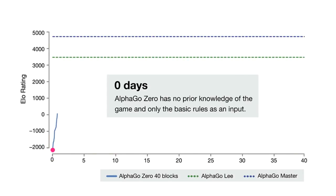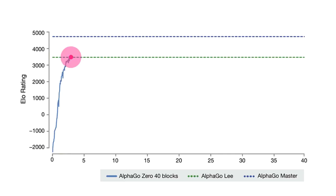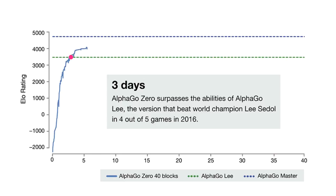The result? AlphaGo Zero initially started out with just input rules to the game and no prior knowledge. After 3 days, it surpassed human level of Go playing.